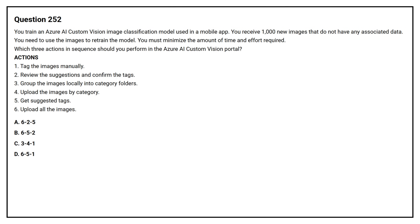Question number 252. You train an Azure AI custom vision image classification model used in a mobile app. You receive 1000 new images that do not have any associated data. You need to use the images to retrain the model. You must minimize the amount of time and effort required. Which three actions in sequence should you perform in the Azure AI custom vision portal?